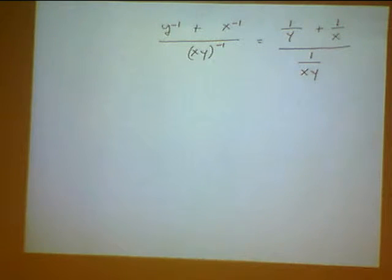But we can only do that if we have one fraction over one fraction. Now when we look at our current problem, if I look at the denominator, I have one fraction. So the denominator is good to go. However, when you look at the numerator, it is not one fraction. It's two fractions.